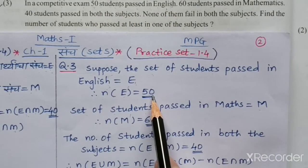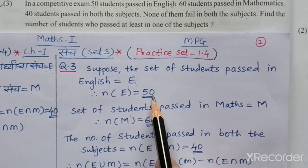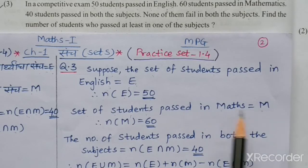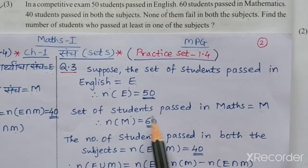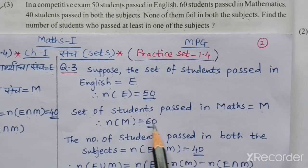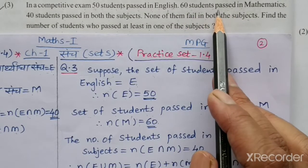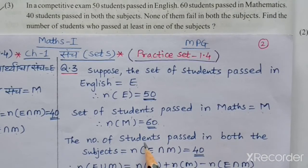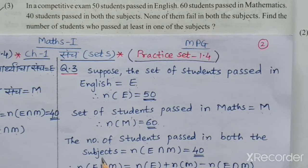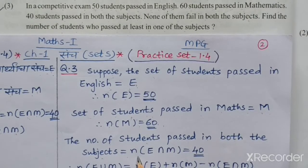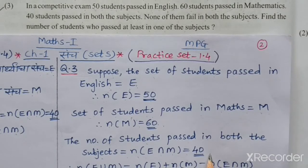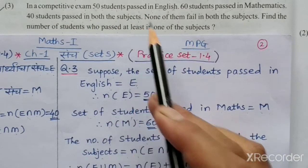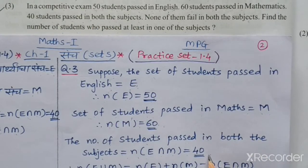Similarly, let M be the set of students who passed in maths, so n(M) = 60. The number of students who passed in both subjects, n(E∩M), is equal to 40. These are the values given in the example.